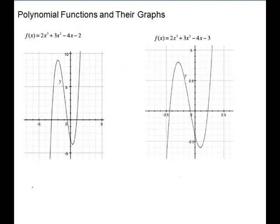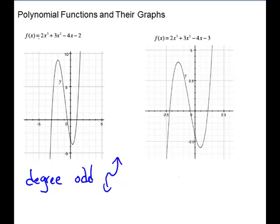Let's look at some graphs. First look at your degree — the degree is the highest exponent. So our degree is 3, which is odd, which would make it look like a cube graph. The leading coefficient is positive, so it's not going to turn upside down. So far to the left the end behavior is going down — it's going to fall to the left and rise as it goes to the right.